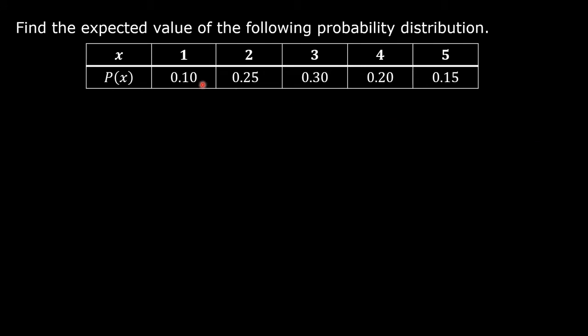Example: find the expected value of the following probability distribution. The specific values of the random variable, represented by lowercase x, are 1, 2, 3, 4, and 5. The corresponding probabilities are 0.10, 0.25, 0.30, 0.20, and 0.15.